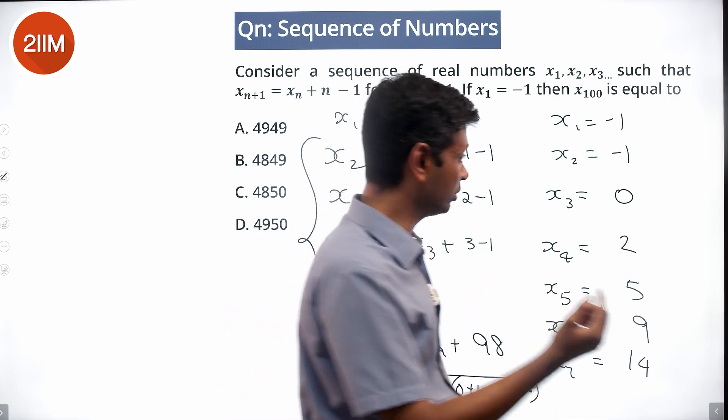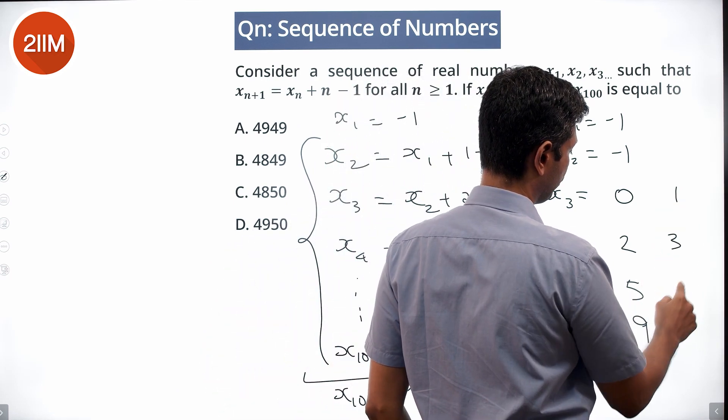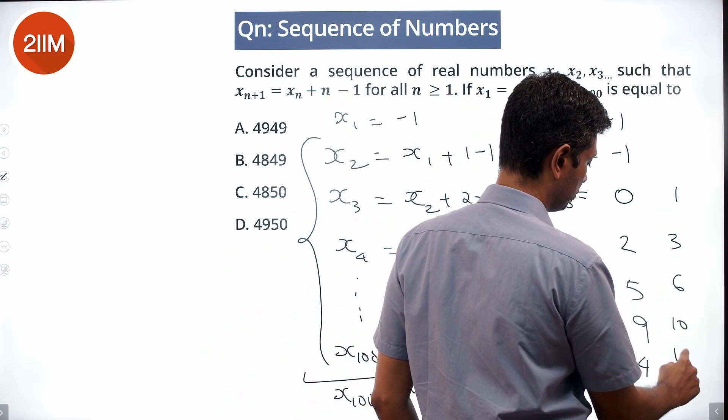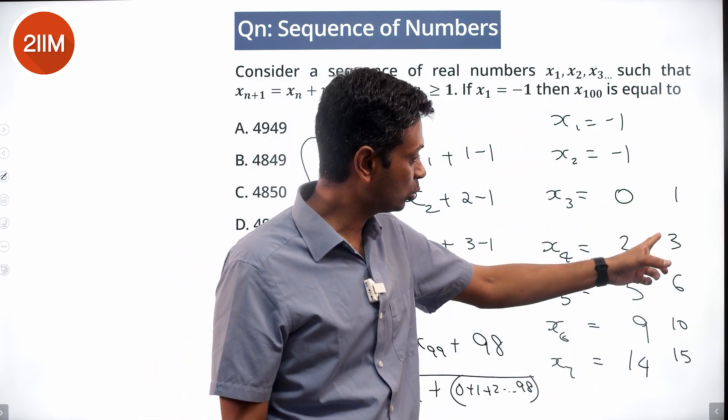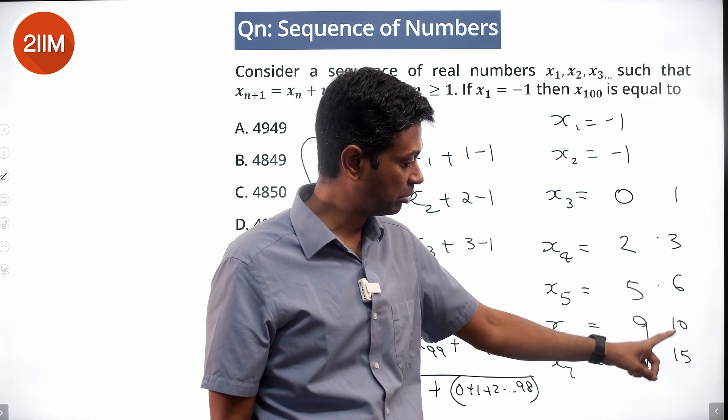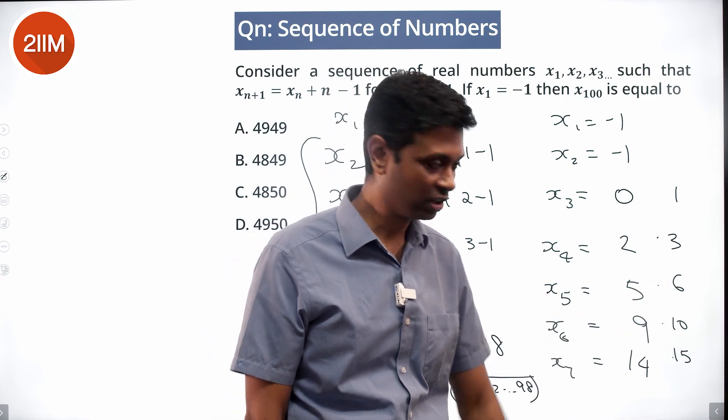If you add 1 to these numbers - 1, 3, 6, 10, 15 - that's very interesting. This is just the sum of 1 natural number, sum of 2 natural numbers, sum of 3 natural numbers, sum of 4 natural numbers, sum of 5 natural numbers.